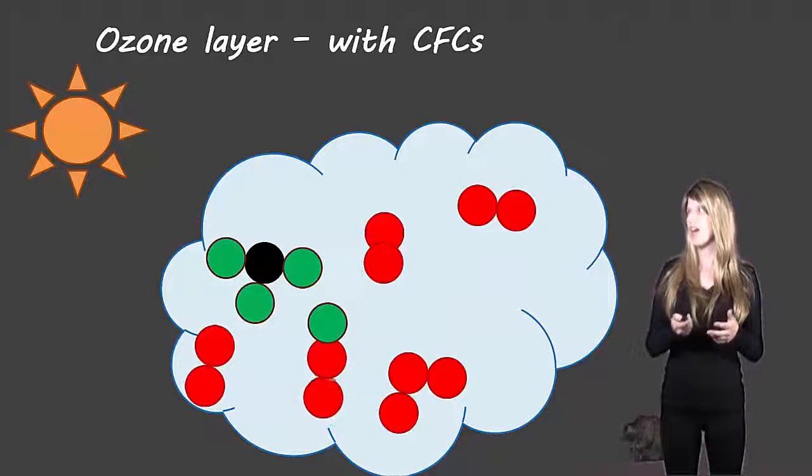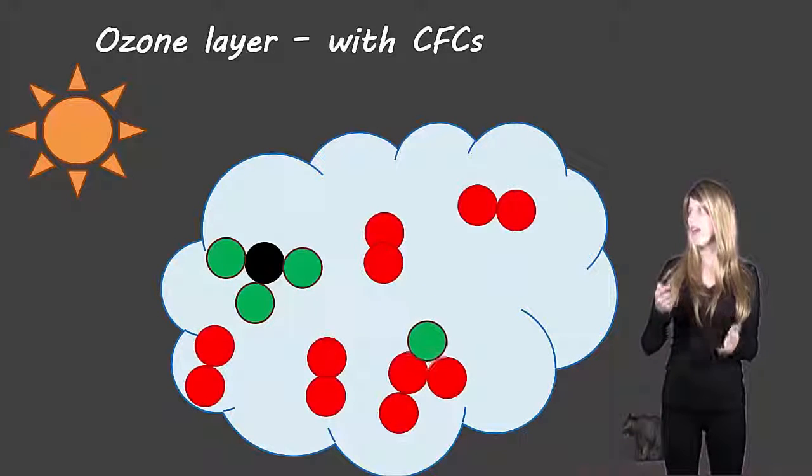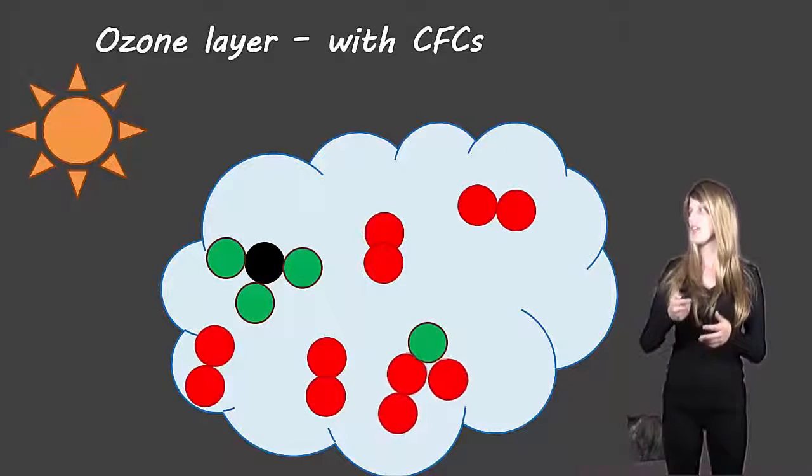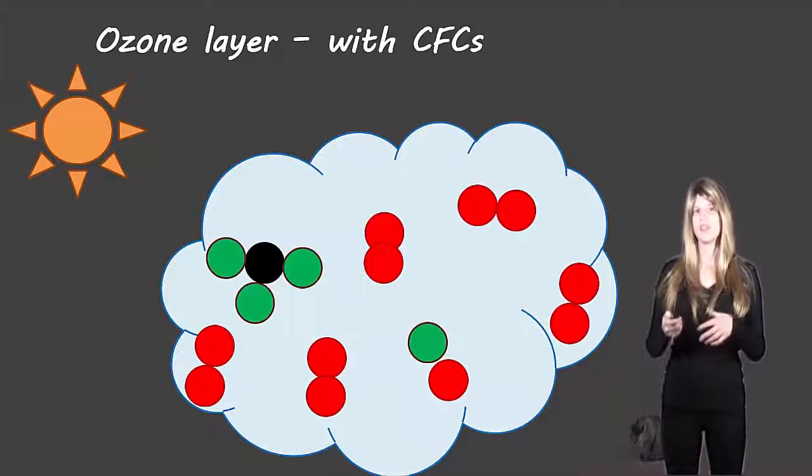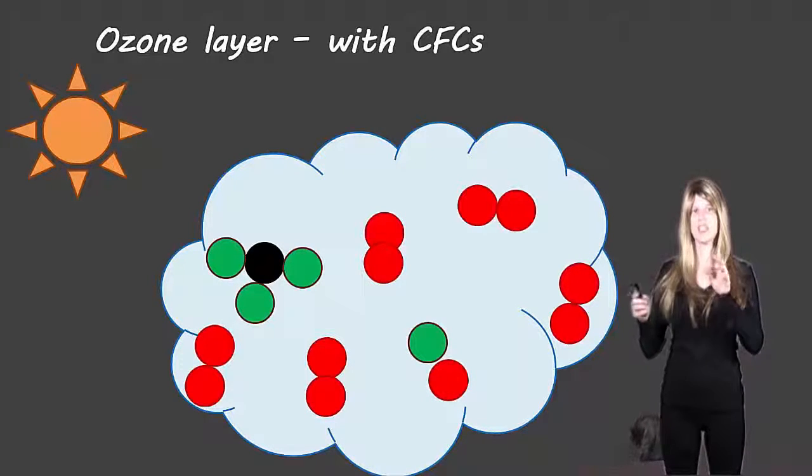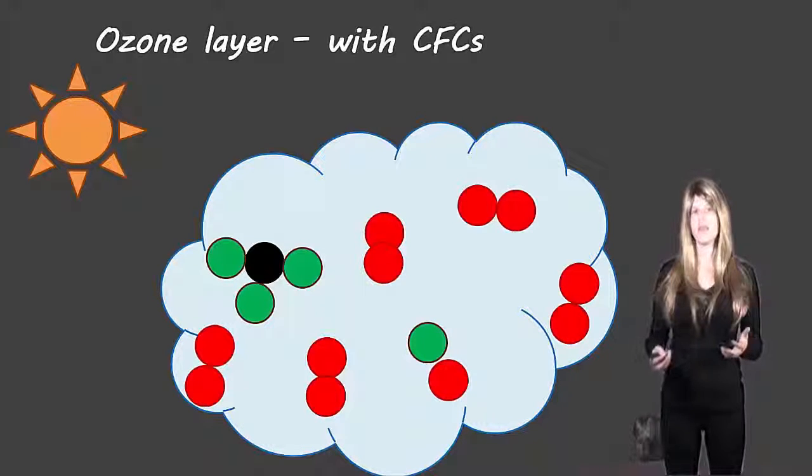And then another oxygen atom can come join on to the oxygen atom that's attached to the chlorine or fluorine and that allows the chlorine or fluorine to go interact with another ozone molecule after that. And so one chlorine or fluorine can actually interact with many different ozone molecules and break them all up.